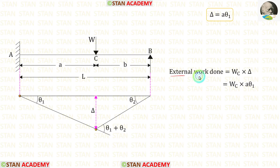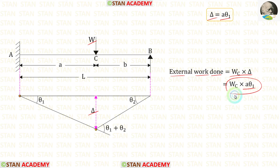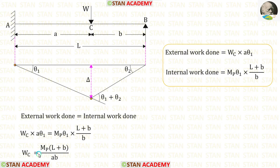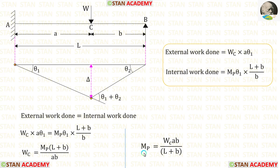Now let us find the external work done. For that we multiply the load by the displacement delta, and for delta we apply a·theta1. This is our external work done. Since external work done and internal work done must be equal, we equate these two. We can eliminate theta1 and take a to the other side into the denominator. Finally for Wc we get Mb into (l plus b) upon ab. Also we can make an expression for Mb equal to Wc·ab upon (l plus b).